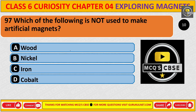Which of the following is not used to make an artificial magnet? The correct answer is A. Wood.